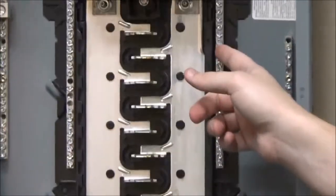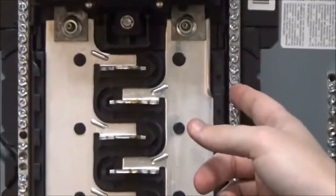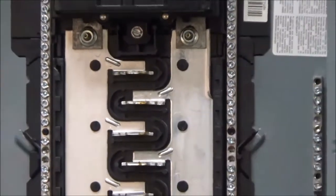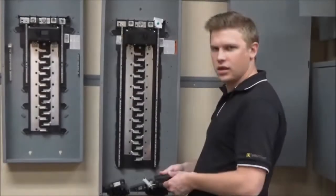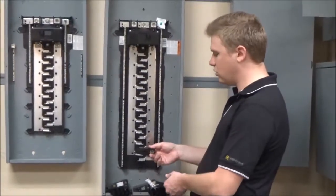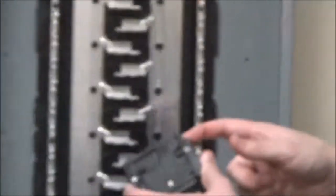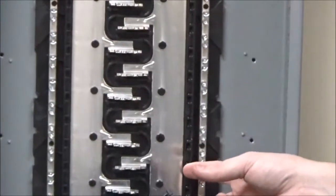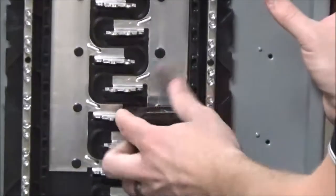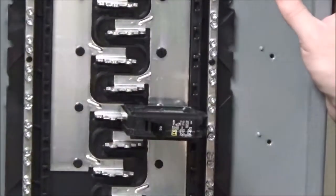To install a standard Homeline plug-on breaker, you would slip this tab into the notch and then rock forward to attach it to the bus. The same method is used on the standard panels.